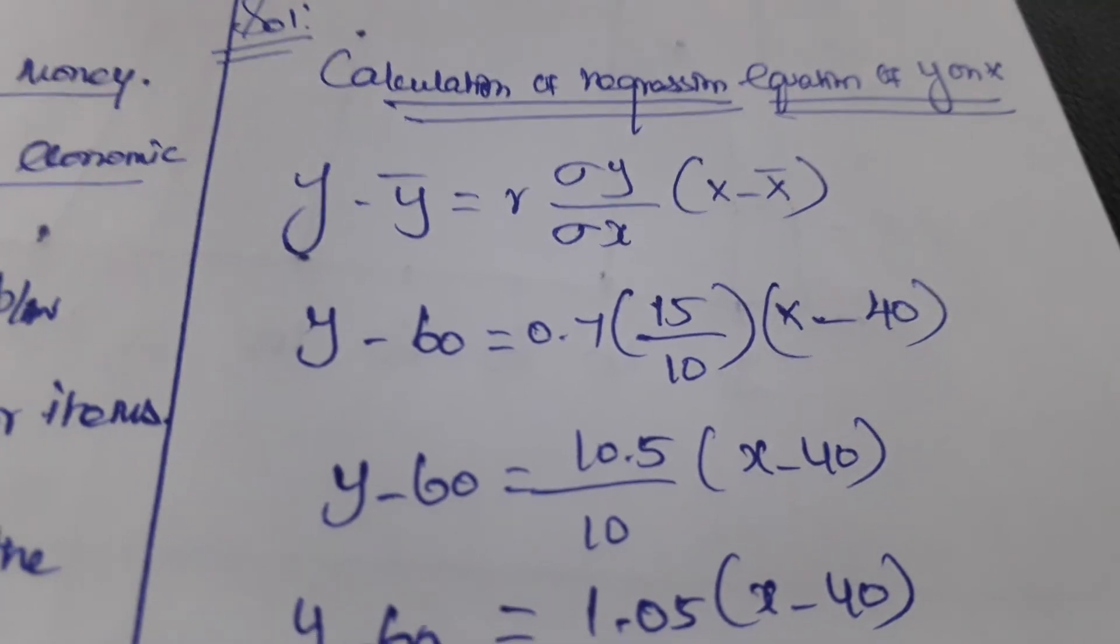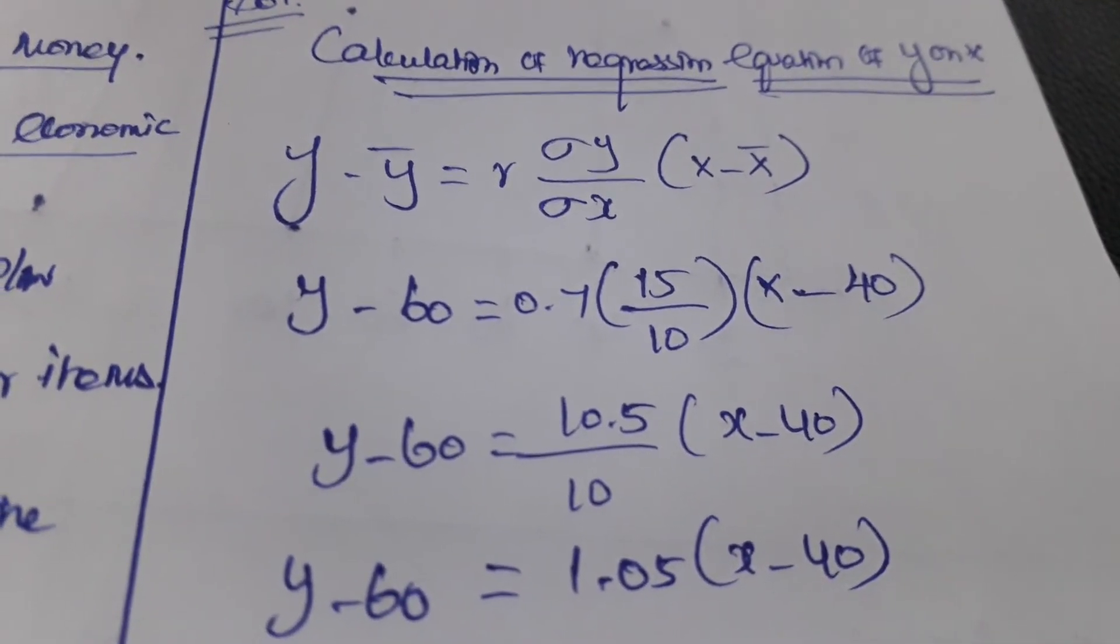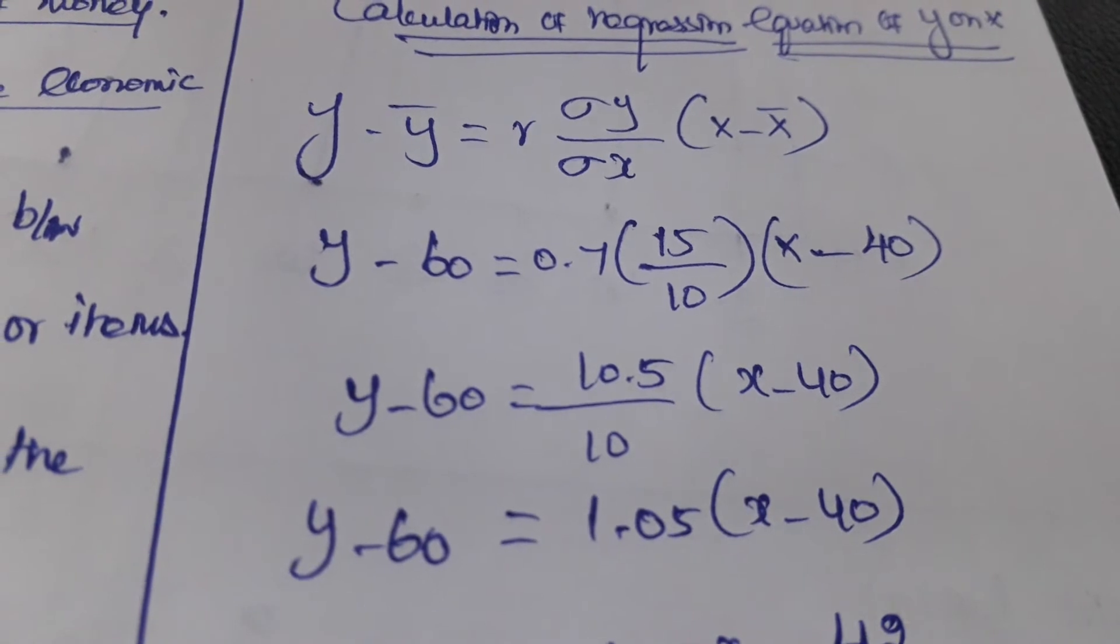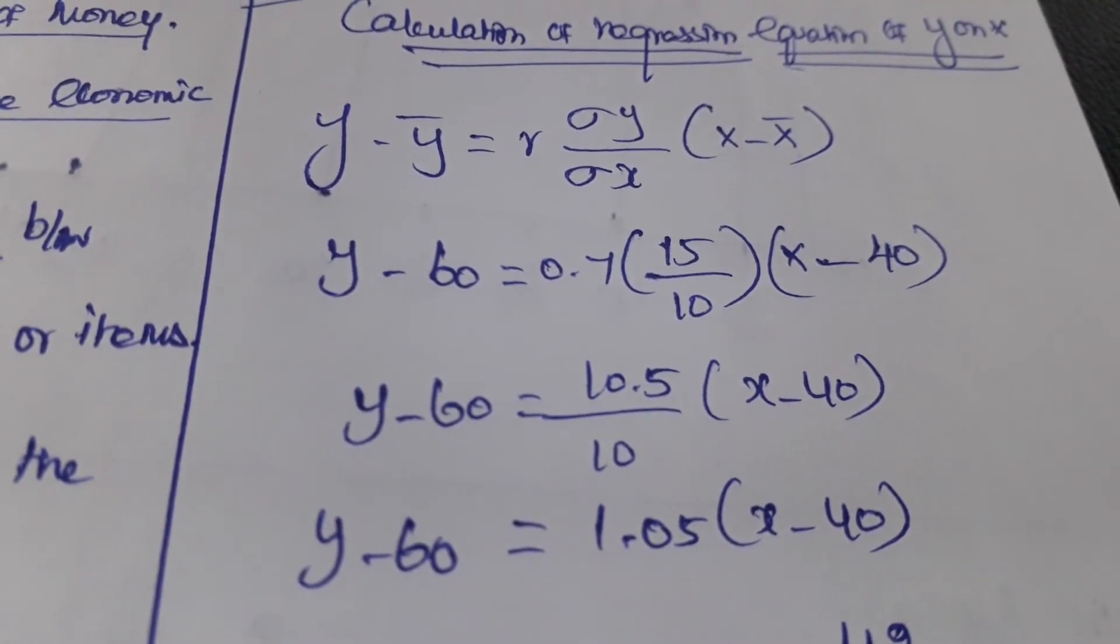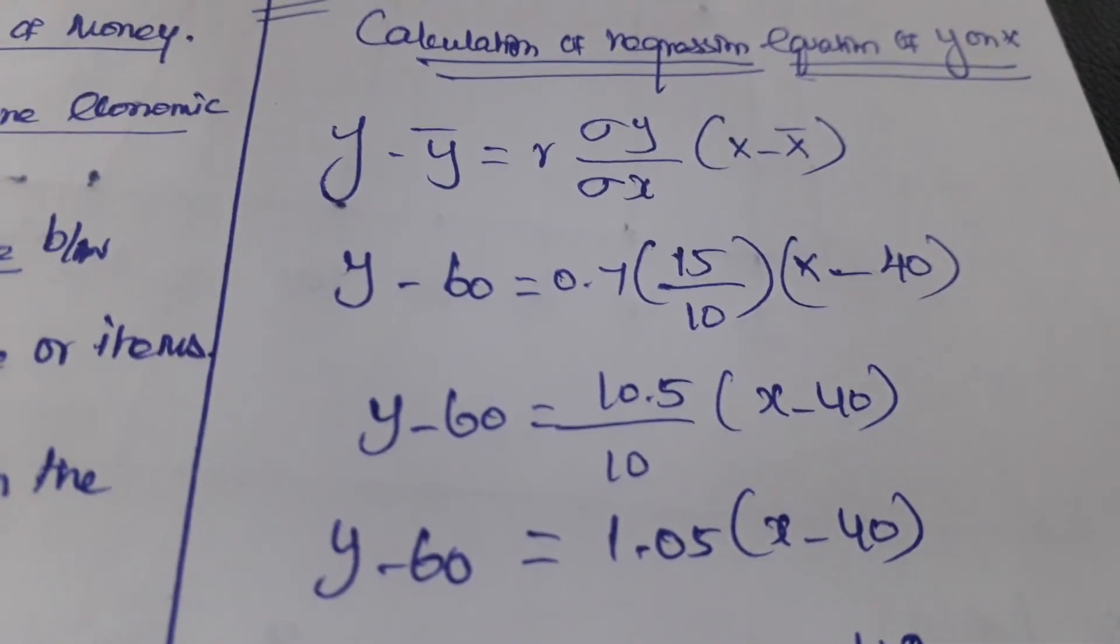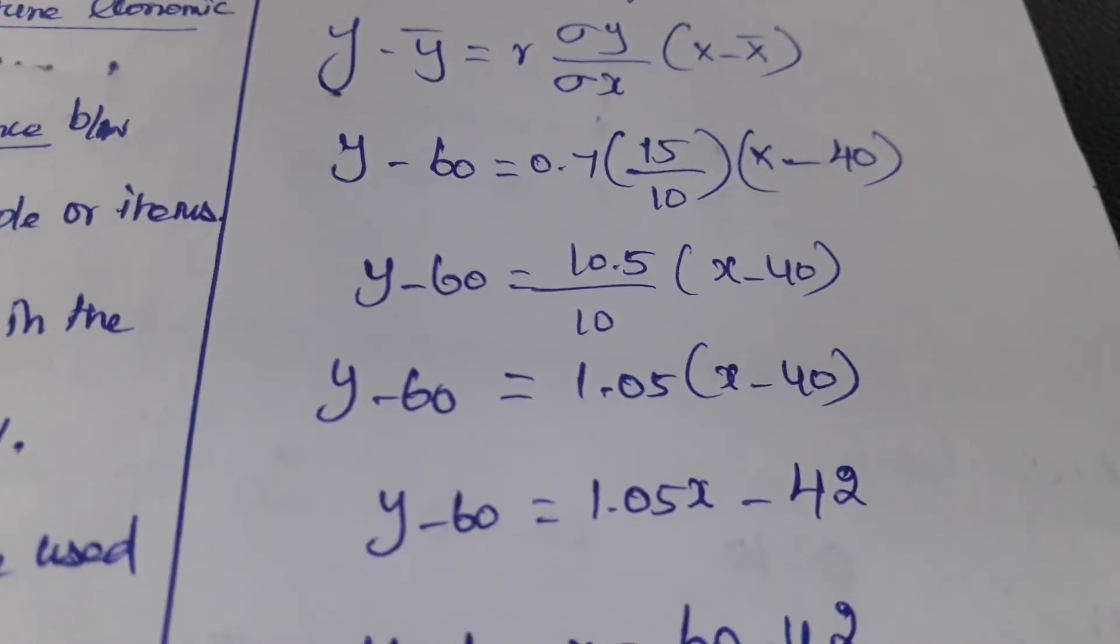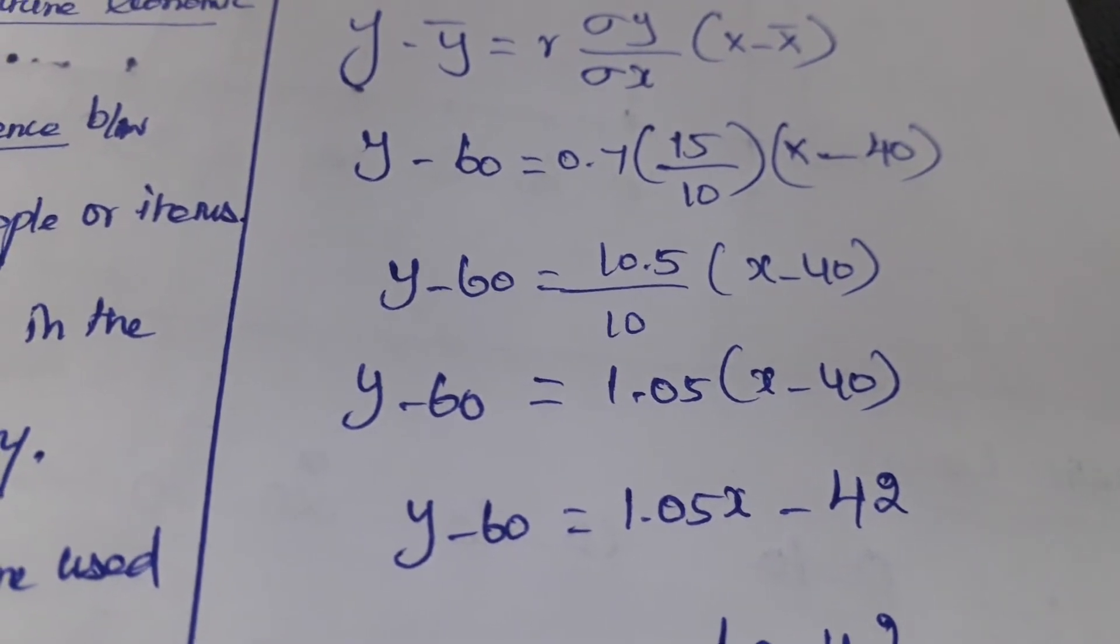We need to simplify this further. Y minus 60 equals 0.7 multiplied by 15, we can get 10.5 divided by 10, into X minus 40.